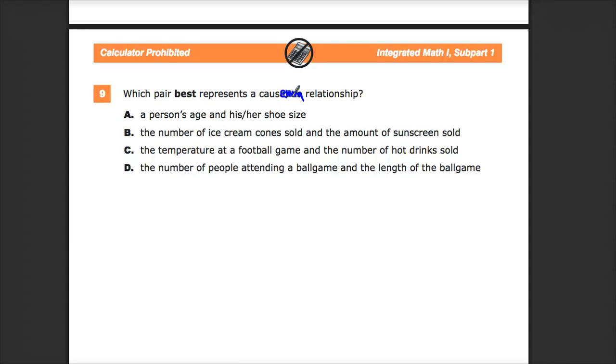A says a person's age and his, her shoe size. Not much, because your shoe size does, as a child that tends to be the case, but there's a lot of children who are in middle school or high school that have much bigger feet than adults. So that's not really, there's not even much of a correlation. Definitely not enough to prove causation.